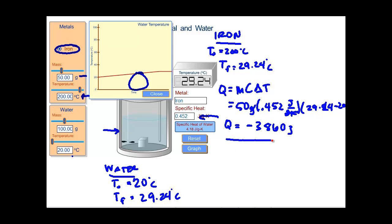Now if we look at the same thing for the water, what we're hoping to see is the same amount of heat transfer. So that's going to be the mass of the water, 100 grams, times the specific heat of water, 4.18 joules per gram kelvin,